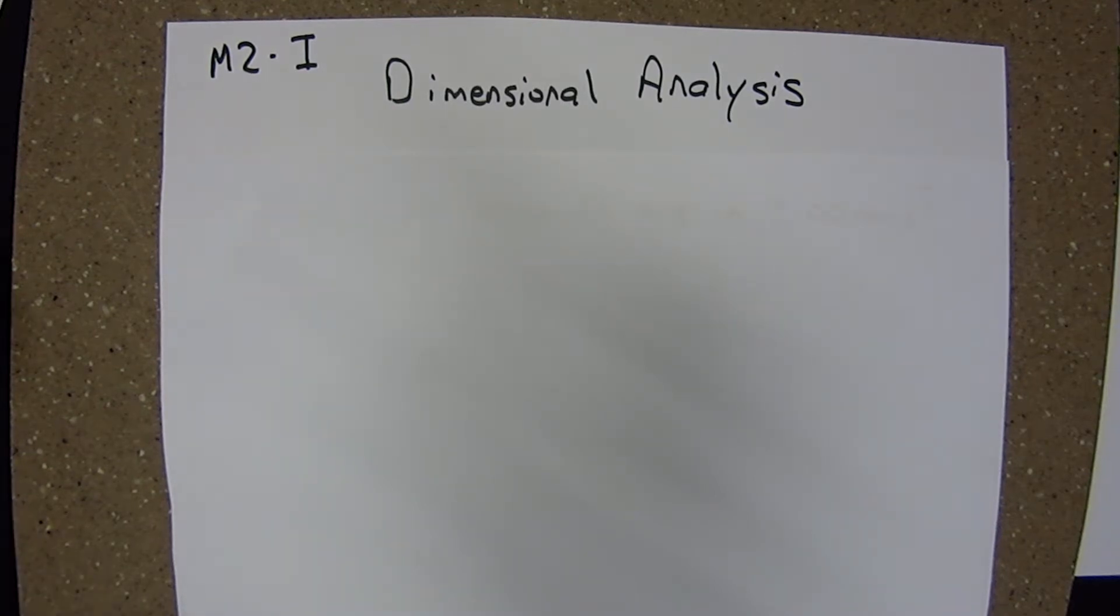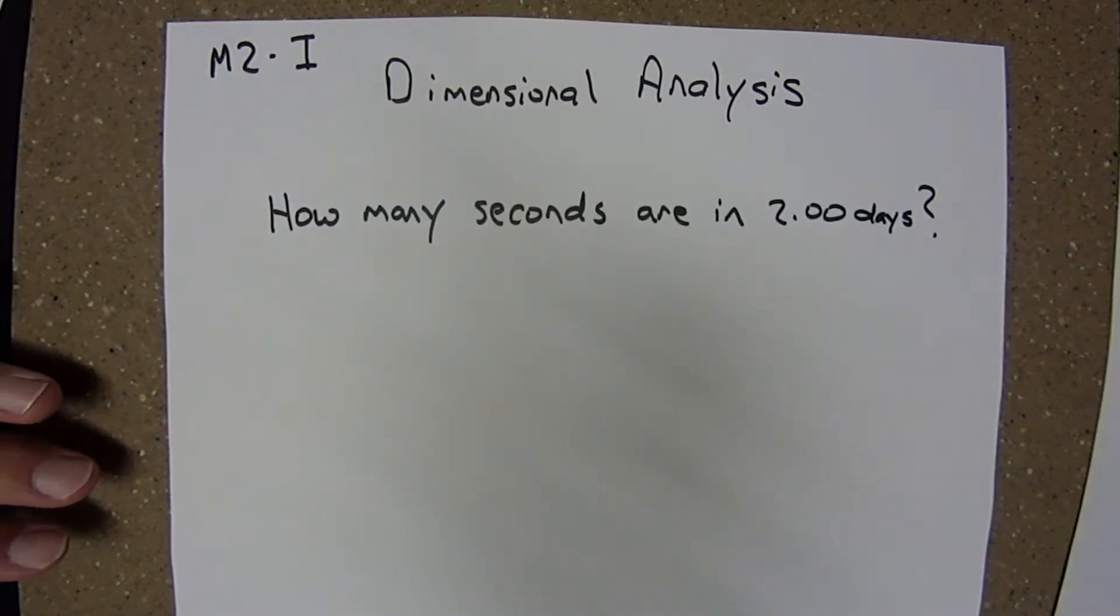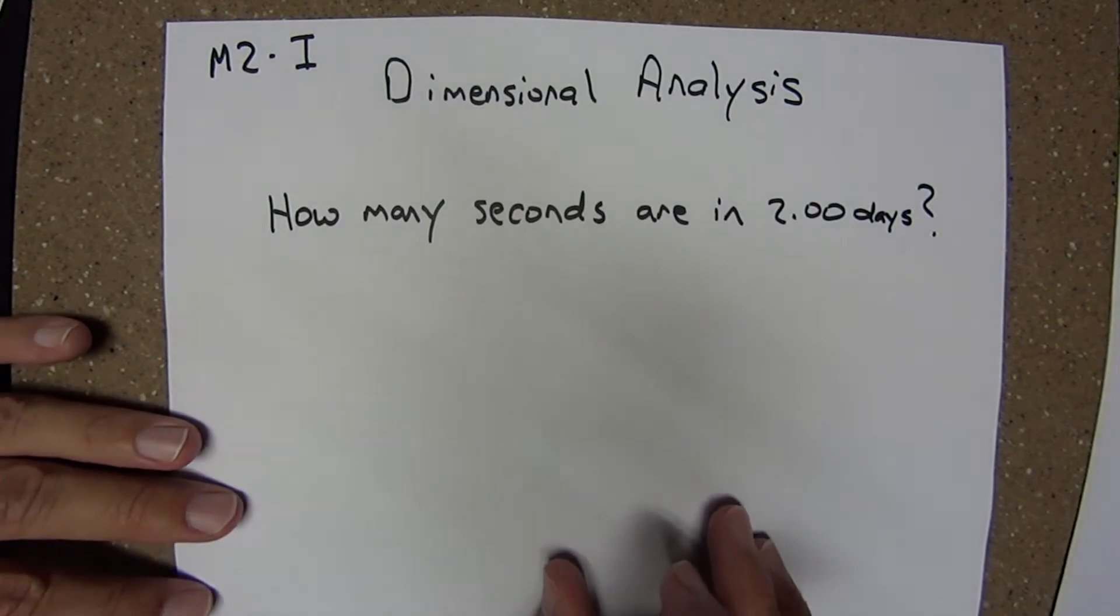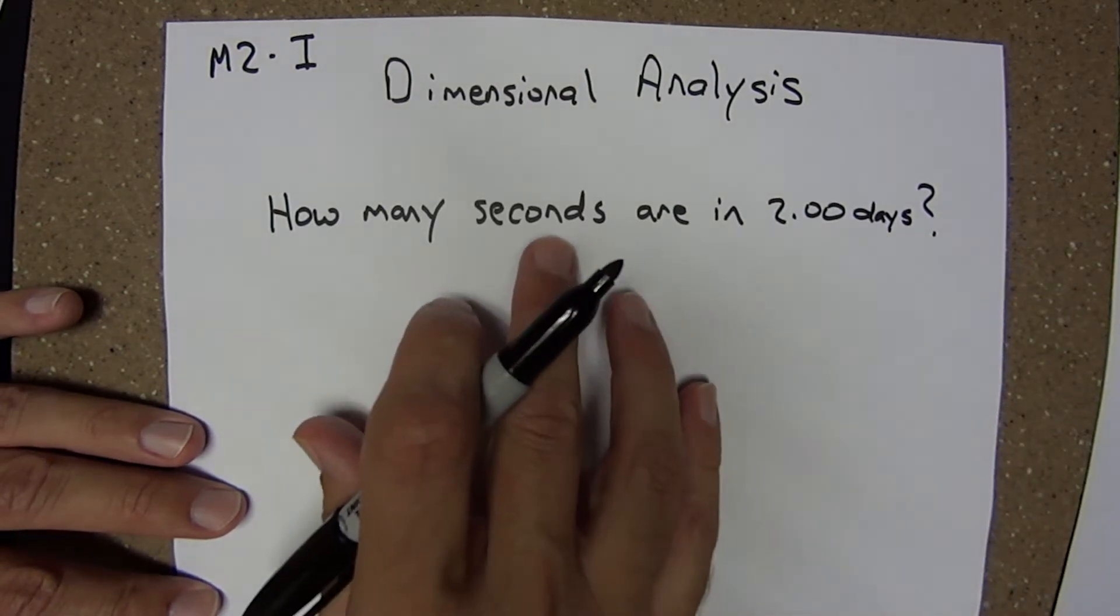For example, as part of a larger problem in chemical kinetics, I might need to know how many seconds are in 2.00 days. I'm going to use the factor label method, consisting of a series of horizontal and vertical lines, to convert days to seconds.